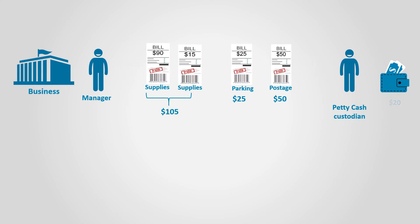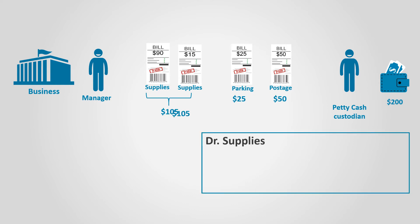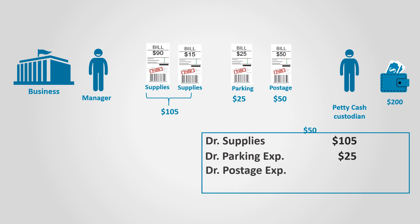The entry to recognize all the expenses incurred is as follows: debit supplies for $105 — notice that both supplies receipts are added together — debit parking expenses for $25, debit postage expense for $50, and credit cash for $180. When the custodian receives the cash of $180, the amount in the Petty Cash Fund increases to $200 again. Note that the Petty Cash account is not affected.